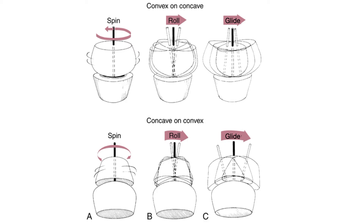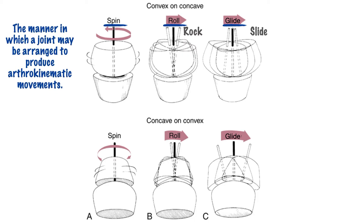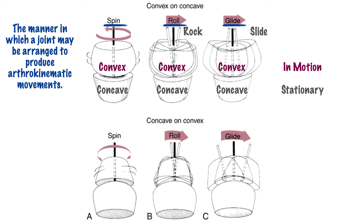Now that you're aware of the three primary types of arthrokinematic movements, let's discuss the image on your screen. On the top row we have spin, roll (sometimes referred to as rock), and glide (sometimes referred to as slide). Above this first row is the title 'Convex on Concave,' representing the manner in which a joint may be arranged. Specifically, the convex segment is the one in motion while the concave structure is relatively stationary, so we may see the convex structure spin, roll, or glide on the concave surface.